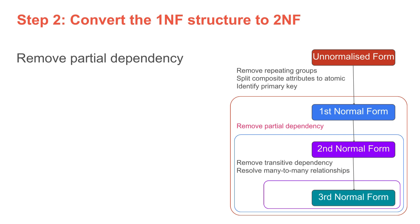Moving on to step two: converting the logical data model from first normal form to second normal form. Remember, the prerequisite for 2NF is that the model must already be in 1NF. There is only one action to perform in step two, and that is to remove partial dependencies — in other words, remove data attributes that are not completely dependent on the primary key and move them to new tables. We have to check all tables, sometimes repeatedly, to achieve proper 2NF.